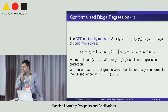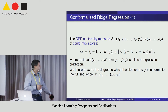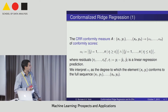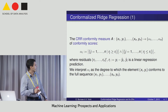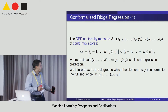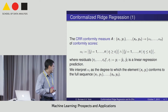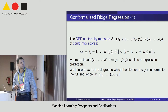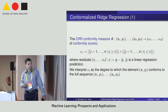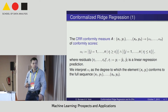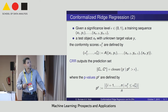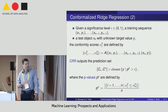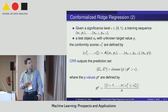What is conformal prediction for this particular case? First of all, the conformity measure is a measure that, for a given sample, provides us conformity scores. Each conformity score can be calculated as the score which gives us the degree to which a particular element of the sample conforms to the full sequence of the dataset.